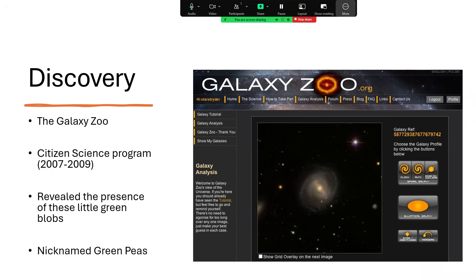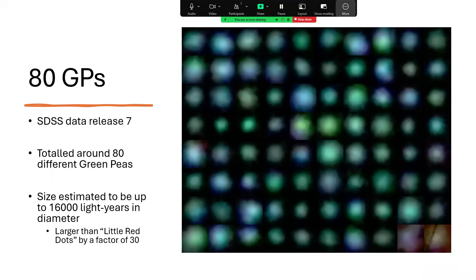Here's 80 of them, and they really do look green and they really do look like somewhat indistinct blobs. We think these are small galaxies, estimated to be up to about 16,000 light-years in diameter, and so larger by a factor of 30 than the Little Red Dots. Please go and see the Little Red Dots video if you haven't seen it.